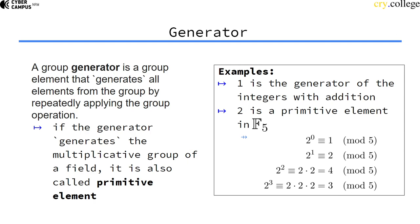Two to the power of 0 is 1. 2^1 is 2. 2^2 is 4. 2^3 equals 2 times 2 times 2 equals 3 modulo 5.